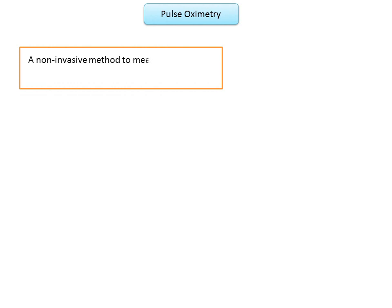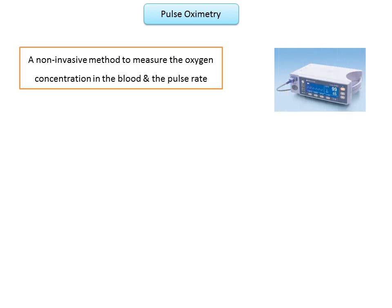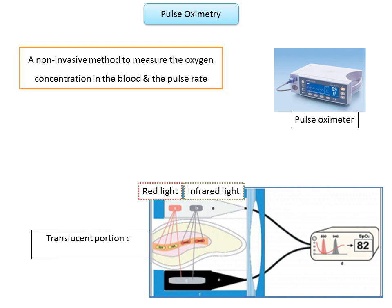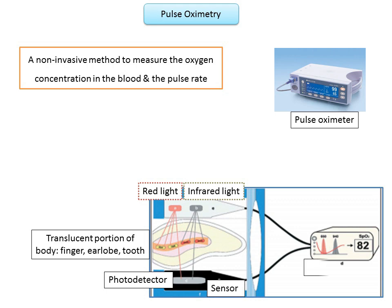Another method of pulp vitality testing is pulse oximetry. Pulse oximetry is a non-invasive method designed to measure the oxygen concentration in the blood and the pulse rate. It works by transmitting two wavelengths of light — red light and an infrared light — which passes through a translucent portion of a patient's body, like a finger, ear lobe, or tooth, and is then detected by the photo detector. The photo detector sends signals to a microprocessor which quantifies the data and provides the result.